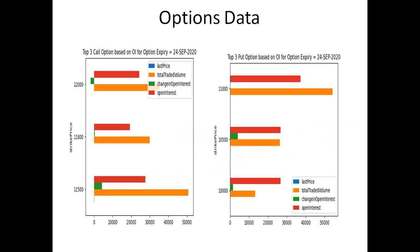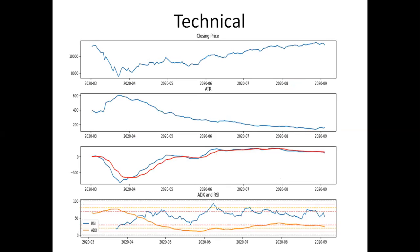Option chain data for this month's expiry is suggesting that the market will face resistance at 11,500, 11,800, and 12,000 levels. The highest open interest is currently at 11,500 followed by 12,000. Similarly for support, you will get support at 11,000 and 10,500 — highest open interest is at 11,000. There are chances of monthly expiry at around 11,100 — that's my bias. Technically, MACD is currently showing a downward signal, which is what has made me bearish in this market, as there was a crossover on MACD.